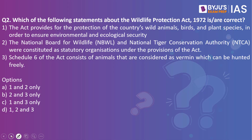Now let's look into the next practice question. Which of the following statements about the Wildlife Protection Act of 1972 is correct? The Act provides for the protection of the country's wild animals, birds and plant species in order to ensure environmental and ecological security. The National Board for Wildlife and National Tiger Conservation Authority were constituted as statutory organizations under the provisions of the Act. Schedule 6 of the Act consists of animals that are considered as vermin which can be hunted freely.